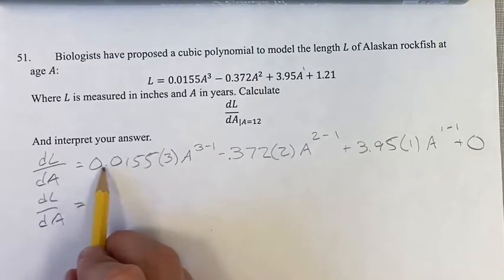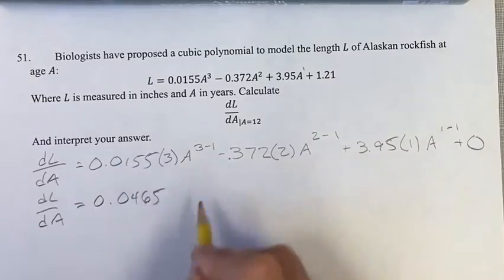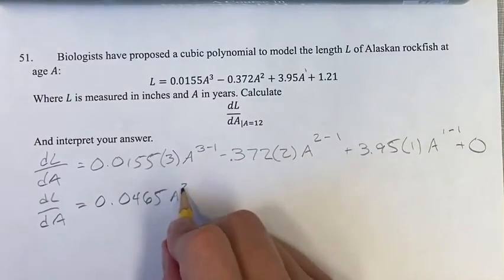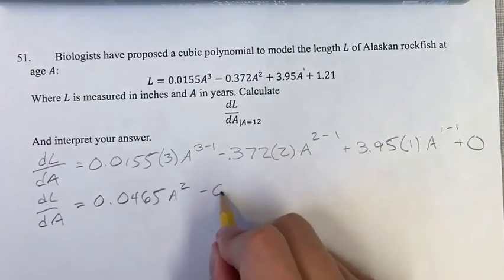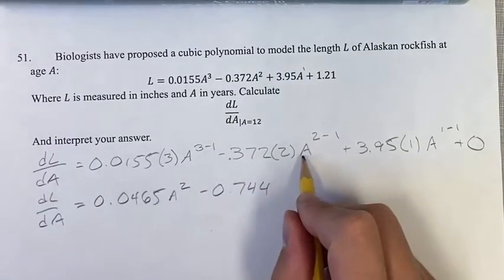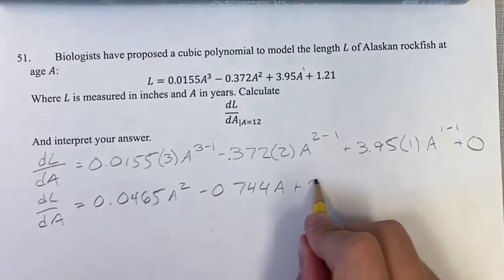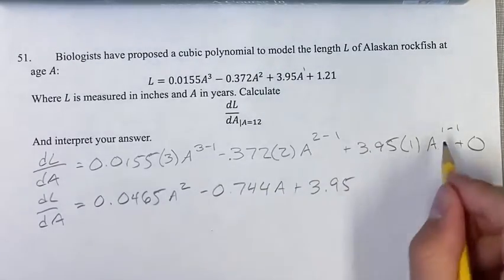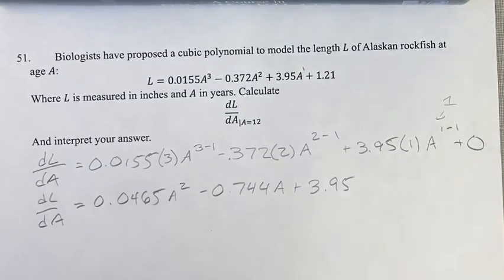Simplifying this out, we have 0.0155 times three is 0.0465 A squared, minus 0.372 times two is 0.744 A, plus 3.95 times A to the zero, which is just one. So it's 3.95.